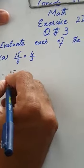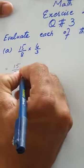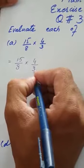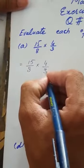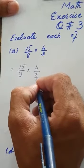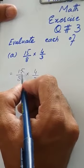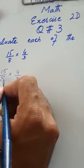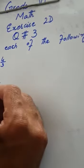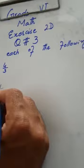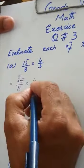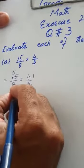Write it again: 15 over 8 multiplied by 4 over 3. Now, as you can see, this 4 and this 3 cannot be cancelled with each other. Similarly, this 15 and 8 cannot be cancelled with each other. So we will try the opposite ways — opposite numbers to cut down.